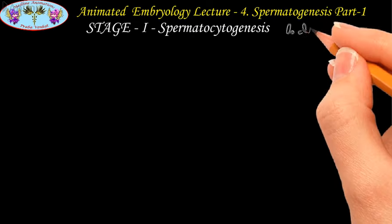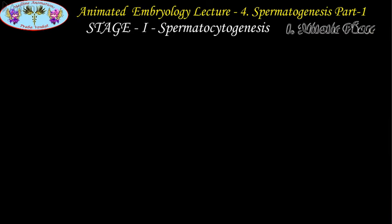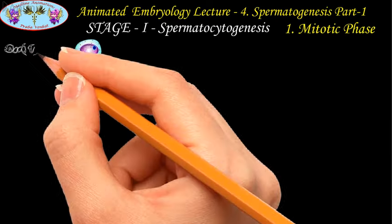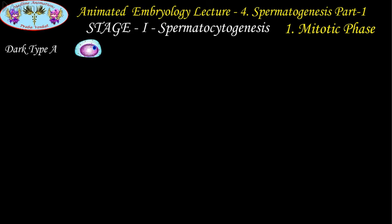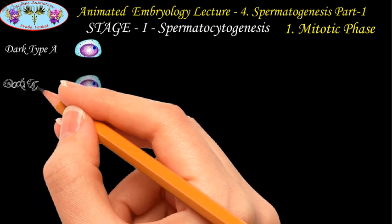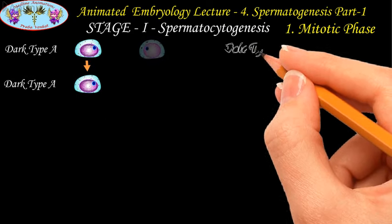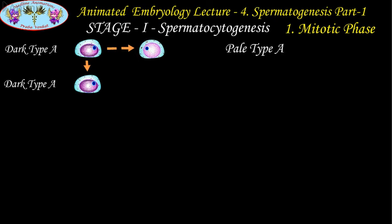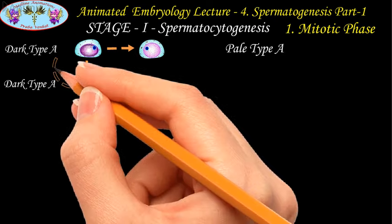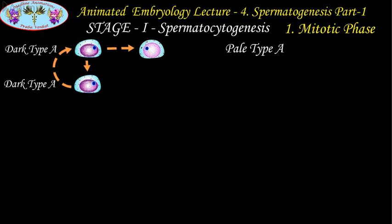Let us see sub-stage 1, the mitotic phase. From puberty at regular intervals, a group of spermatogonial stem cells — the dark type A spermatogonial cells — divide by mitotic division and give rise to one dark type A and one pale type A spermatogonial cell. The dark type A spermatogonial cells are kept as reserve for the next cycle of spermatogenesis, and the pale type A spermatogonial cells enter into the actual process of spermatogenesis.